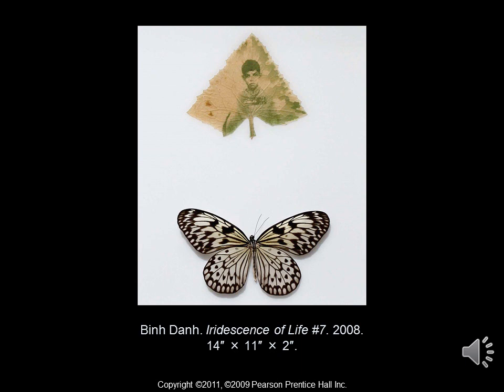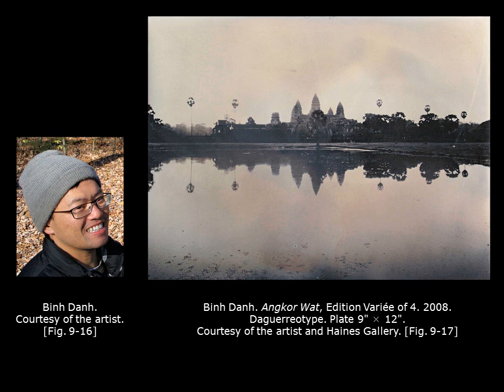This is a really interesting image by Binh Danh, titled Iridescence of Life No. 7 from 2008. This artist created his own method of transferring a photograph onto a leaf, calling the technique chlorophyll printing. You get the results by sandwiching a photographic image and a leaf between panes of glass and leaving it out in the sunlight — a chemical process transfers the image onto the leaf. We also have a portrait of Binh Danh alongside a daguerreotype he made of Angkor Wat in Cambodia. Remember, a daguerreotype is one of the oldest forms of photography, and Binh Danh is equally interested in these older, sometimes chemically dangerous processes as in his more modern experimental techniques.